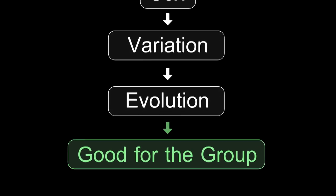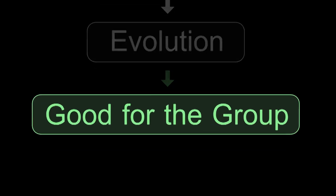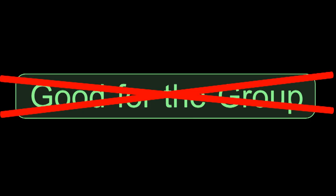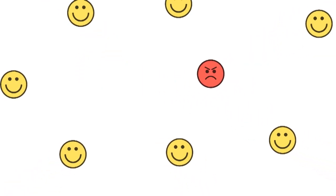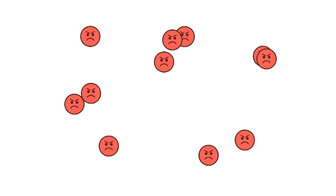But we need to stop and think about this. Does this argument work? Does it even matter what's good for the group? If we ignore the group, if we selfishly do what's best for us, that's often a winning strategy. When individuals compete against each other, selfish individuals win.